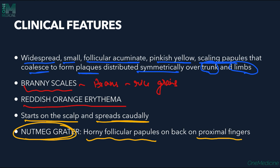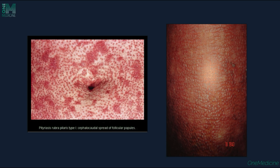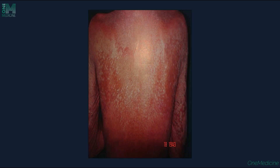The full body surface may be affected with only islands of normal tissue remaining, called nappes claires. Almost all body surface is involved but some areas remain uninvolved. If the disease is very extensive, ectropion and blurred vision can also be associated. These follicular keratotic papules can be seen coalescing to form plaques on the trunk and back.